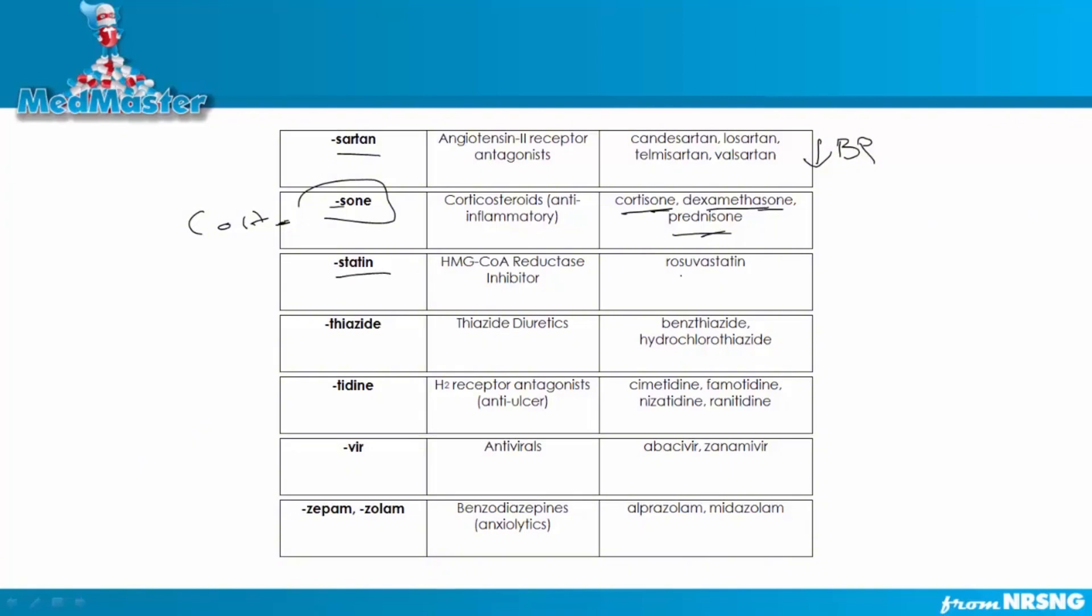Okay, then statins. Statins is a big one. You're going to see rosuvastatin. That's one of the most common ones. Prevastatin. Those are going to be your HMG-CoA reductase inhibitors, also known as your cholesterol-lowering drugs. So your statins are your HMG-CoA reductase inhibitors, also known as cholesterol-lowering drugs. Most of the time, people are going to refer to these as just statins because HMG-CoA reductase is such a long, tiring word.